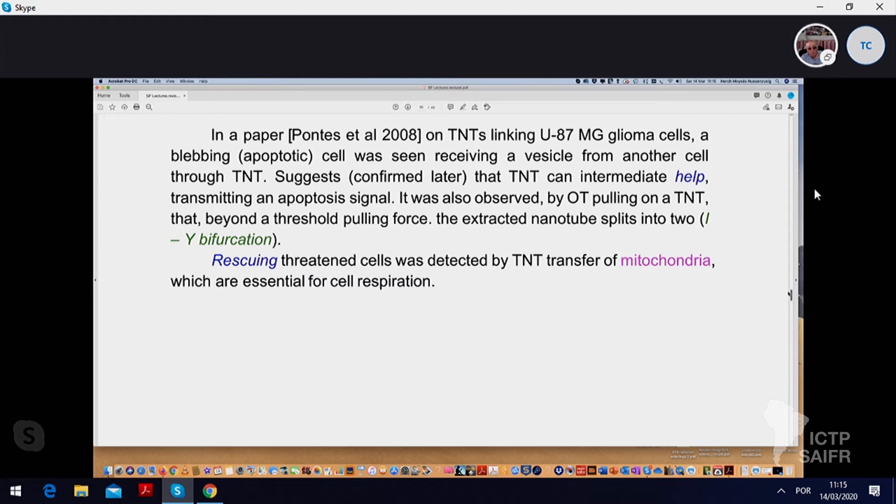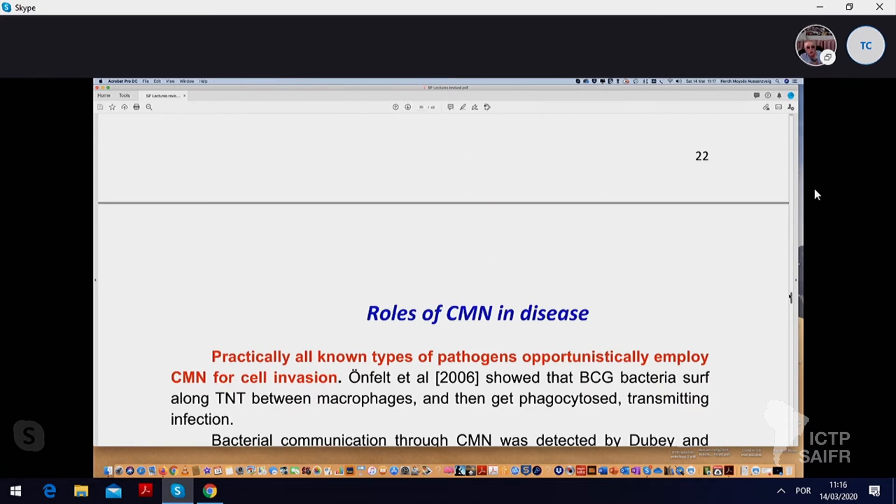Also, we observed in our lab that when you pull on TNT itself with optical tweezers and apply increasing force, you're extracting another nanotube, but beyond the threshold pulling force, it splits into two. That's the I to Y bifurcation. The other function is that the cells can help others by transferring proteins or even mitochondria, which are essential for cell respiration, and we'll see the examples below in the case of cancer.